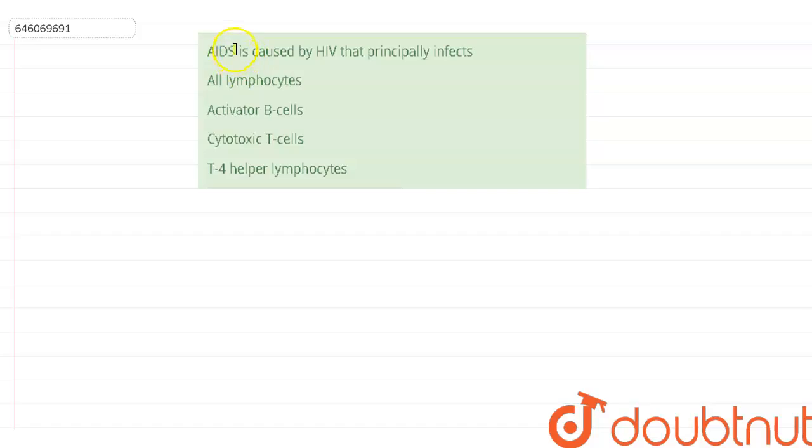Hello everyone, the question that we are going to discuss now is: AIDS is caused by HIV that principally infects. The options are: first, all lymphocytes; second, activator B cells; third, cytotoxic T cells; and fourth, T4 helper lymphocytes.